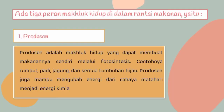Ada 3 peran makhluk hidup di dalam rantai makanan. Yang pertama, produsen. Produsen adalah makhluk hidup yang dapat membuat makanan sendiri melalui fotosintesis. Contohnya rumput, padi, jagung, dan semua tumbuhan hijau. Produsen juga mampu mengubah energi dari cahaya matahari menjadi energi kimia.